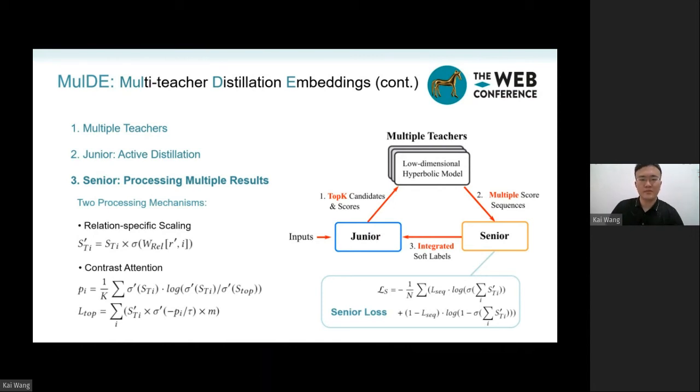Specifically, we propose two processing mechanisms in the senior. The first one is relation-specific scaling. It is a simple weighted operation with minimal weights.